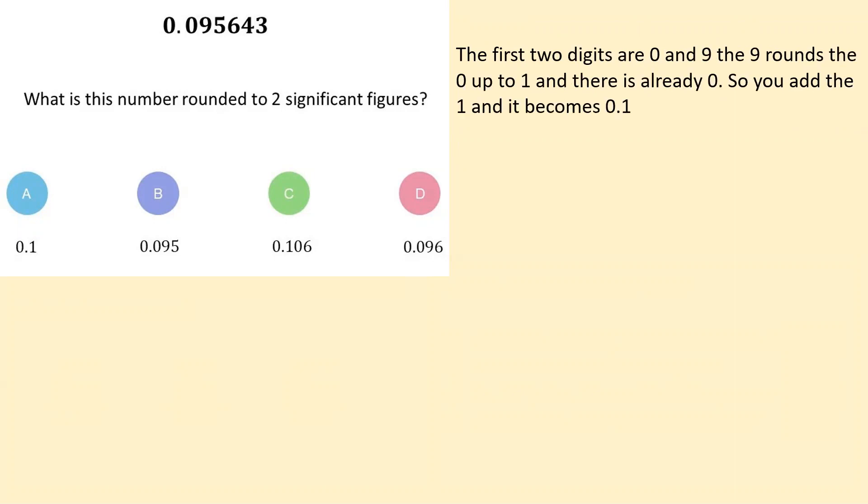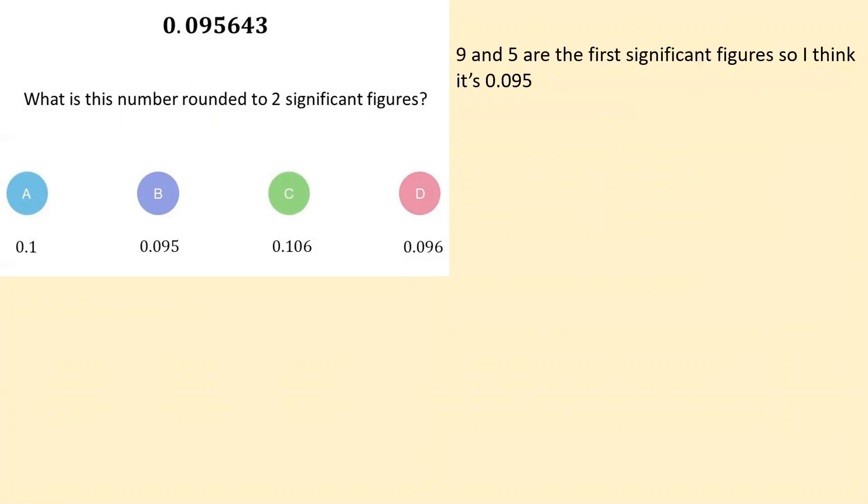Then we have an opinion that disagrees. The first two digits are the zero and the nine. So the nine rounds a zero up to one. So we end up with 0.1. So what this person is saying is that this is the first significant figure. This is the second significant figure. And the nine tells us to round that up. So think about how this person is disagreeing with the other two. And the last one I'm showing here, nine and five are the first significant figures. So they believe it's 0.095.